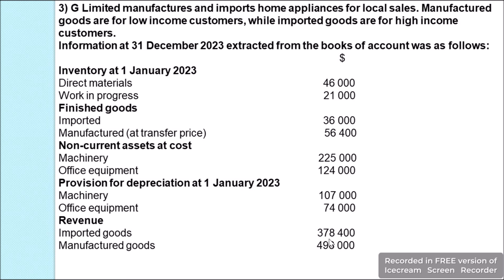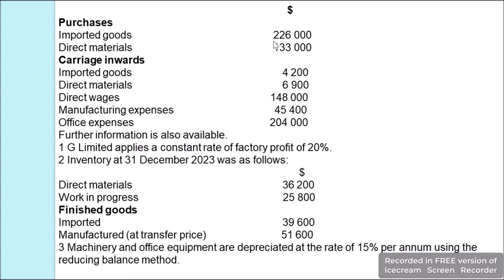Revenue: imported goods $378,400, manufactured goods $498,000. Purchases: imported goods $226,000, direct materials $133,000. Carriage inwards: imported goods $4,200, direct materials $6,900.